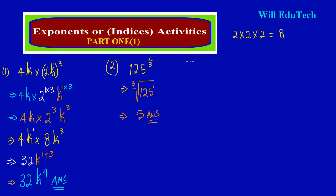Now let's quickly look at question number 3. These are exam-type questions you'll find very useful when doing your end-of-year exams or even your CXC exams. We have 3 squared in the numerator, all over 9 raised to the third power in the denominator, and this is multiplying 27. The first thing you should ask yourself when faced with a problem like this: can I find a common base out of all these numbers? I have a 3 in my numerator, a base 9 in the denominator, and a base 27.